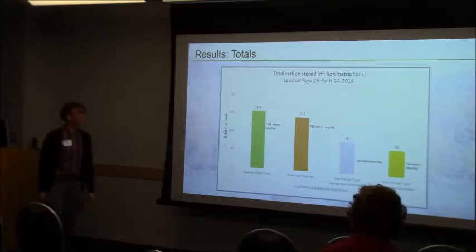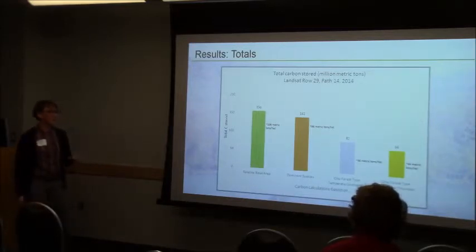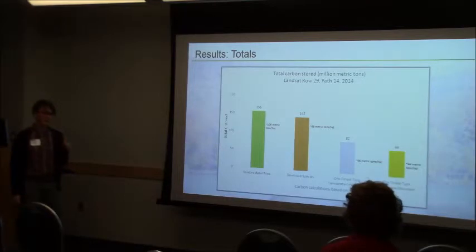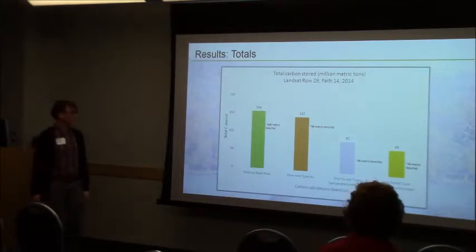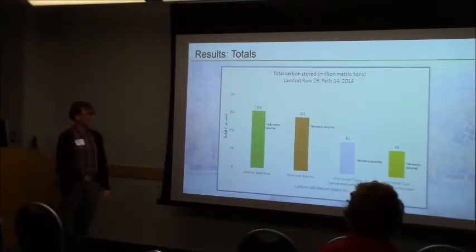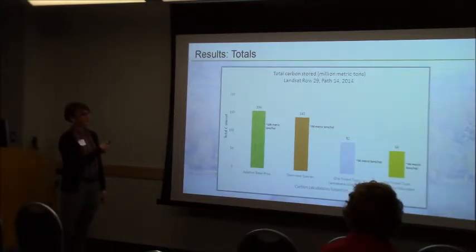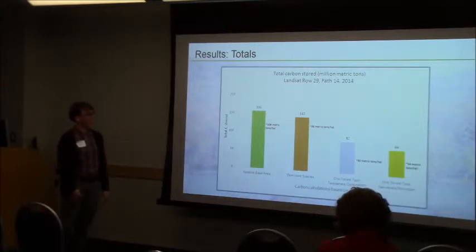I wanted to put error bars on these, but because of the number of pixels, the statistical power is really, really high — the error bars are not visible. But there is about a 10% difference even between the two different ways of incorporating species.